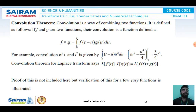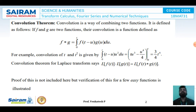First, we will learn the statement of the convolution theorem. The convolution is a way of combining two functions. It is defined as follows: if f and g are two functions, then convolution is a function defined as f star g, equal to the integral from 0 to t of f(t minus u) into g(u) du.